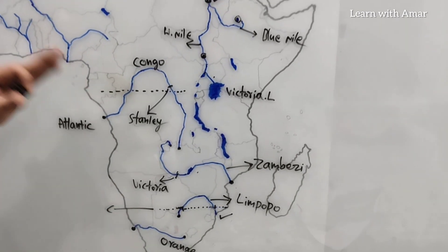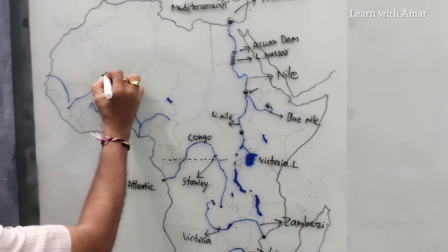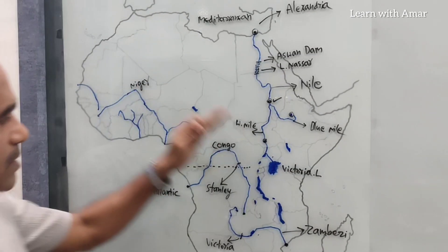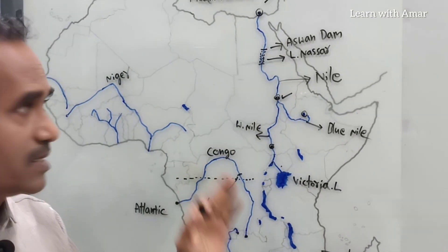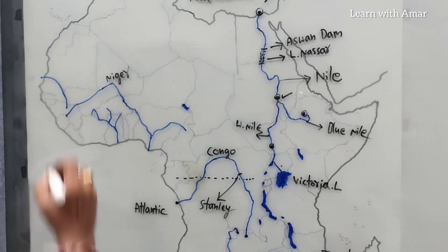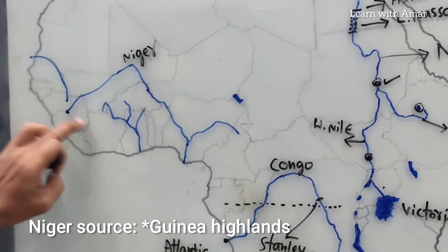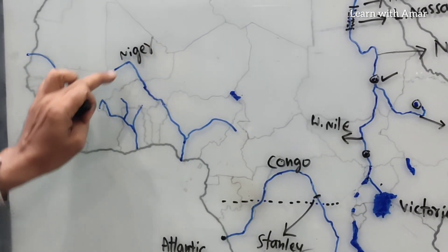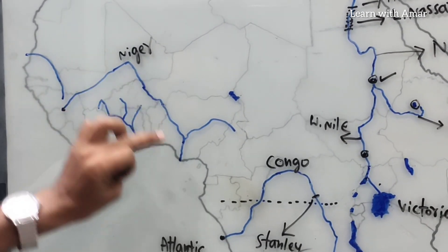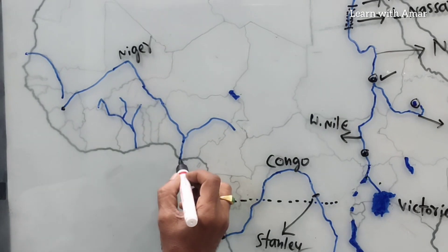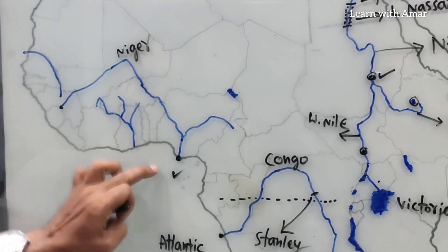Now, come here — this river is River Niger. Almost all the rivers in Africa are named after the countries. Niger River originates in the Guinea Highlands — here is Guinea-Bissau — then moves through Mali, then Burkina Faso, then Niger and Nigeria. Finally, it joins the Gulf of Guinea.